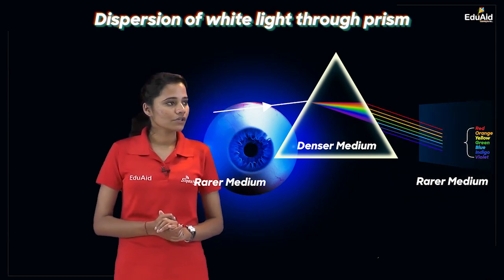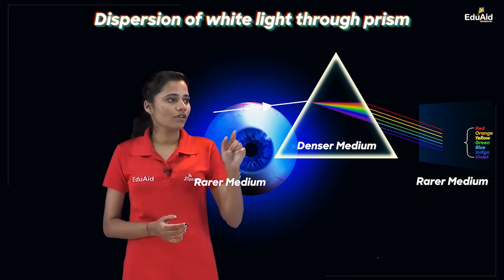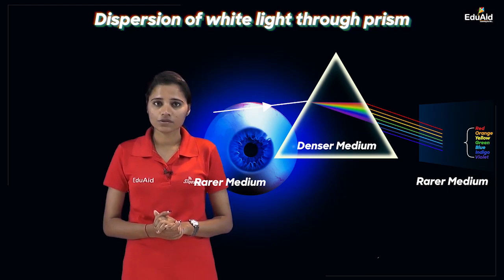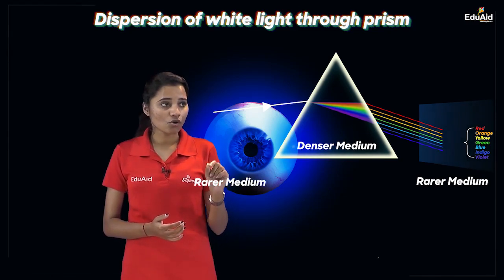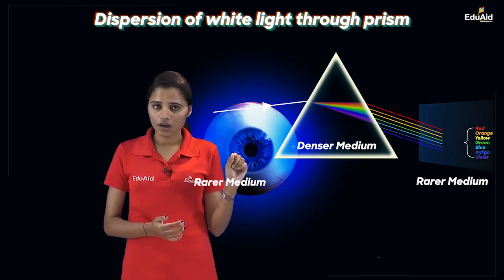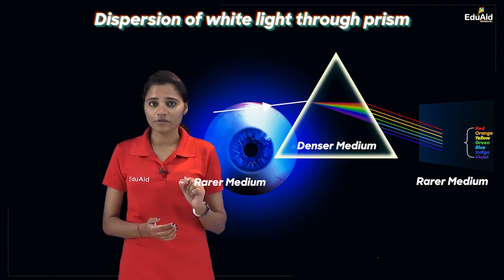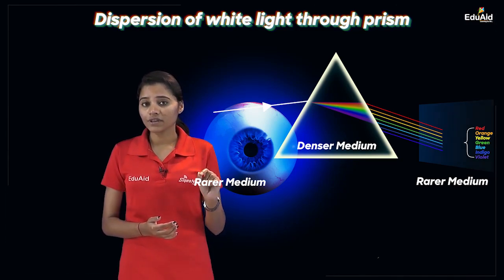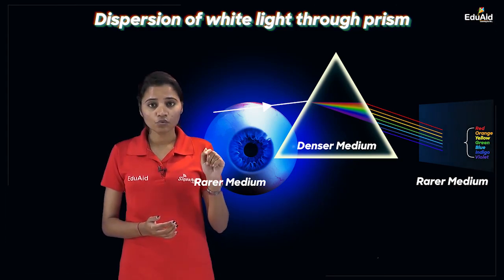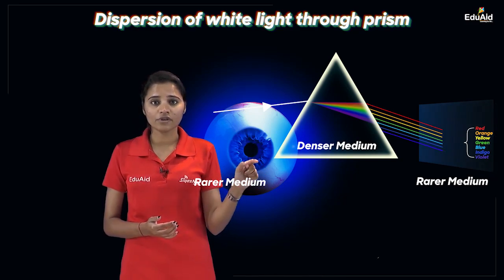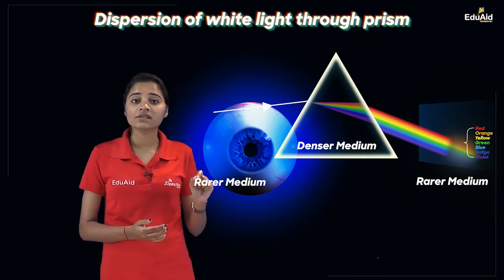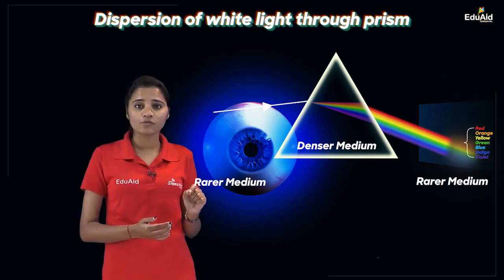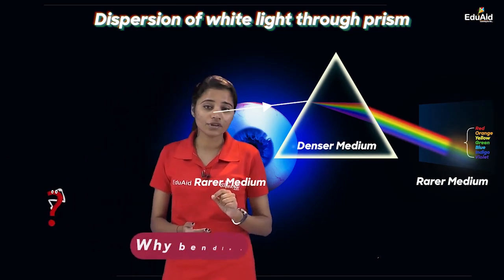On the screen, all seven colours have different positions. Different positions means the paths along which all the colours have travelled are not the same — they do not overlap. The paths are different, which means the extent to which all these colours have suffered deviation is different. The extent to which they have suffered bending inside the prism is different — they are not the same.